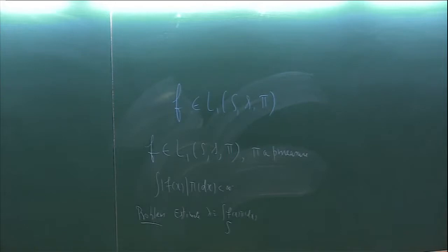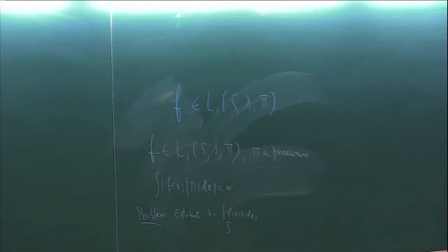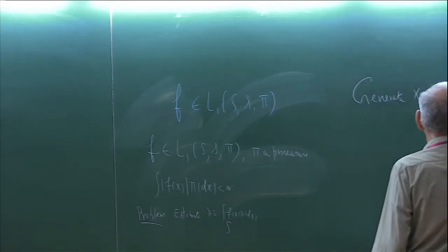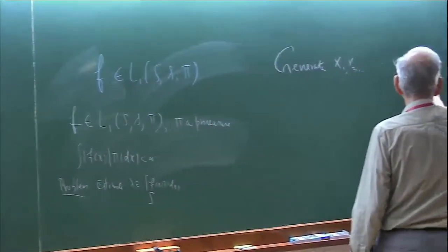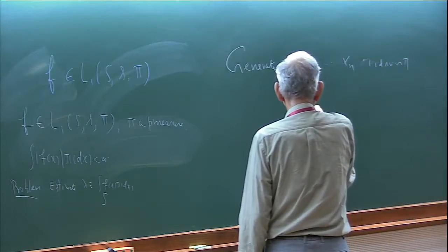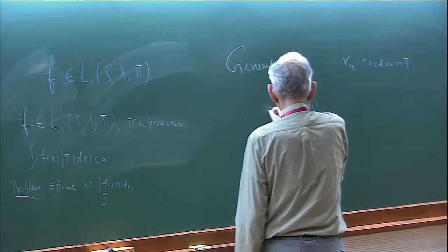One solution is to split the sample space into a number of sets, compute a value in each set and approximate it — but that is not what we want to do. What would you do if you went to the Indian Statistical Institute? ISI would teach you how to generate a sample and then take the average. One simple procedure: generate X1, X2, ..., Xn — random variables, iid, with distribution π — then take the average (1/n)∑f(Xi), i=1 to n, and call it λ̂_n.